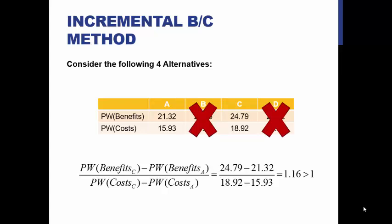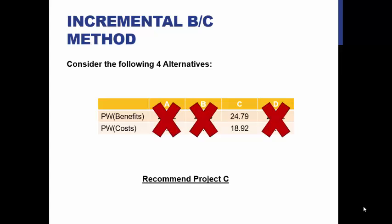Next, compare project A to project C. We perform the same incremental calculation, and this time the ratio is greater than 1 — it's 1.16. In that case, we eliminate the baseline project A. We eliminate the baseline when the incremental ratio is greater than 1, and we eliminate the new project if the ratio is less than 1. Since there are no remaining projects after C, we recommend project C. If there were an additional project E, we would compare C as the baseline to E, but since there isn't, we recommend project C.